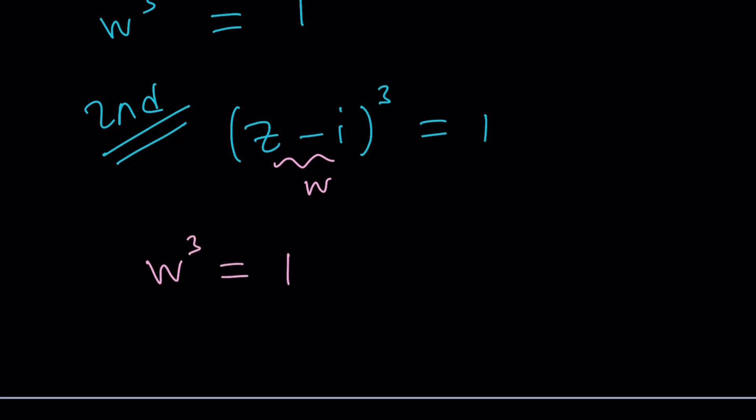So we get W cubed equals 1. So to solve for W, we basically need to think about the cube roots of 1. And there are three cube roots of 1, remember? And obviously, one of them is 1. So W equals 1 is going to be a valid solution. What about the other ones? So here's what you could do.